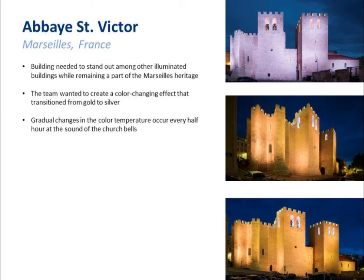At the Abbé St. Victor in Versailles, France — a relatively historic building — the goal was to highlight the heritage of the building and its location. The team wanted to wash the building in vibrant light with the ability to change it. Not just from warm to cool light, but they actually wanted the building to be able to transition from gold to silver, gradually changing the color temperature by washing it with tunable and color-changing lights.